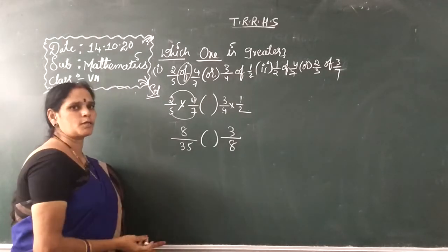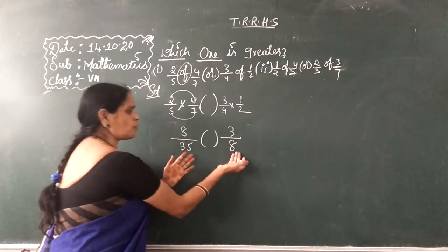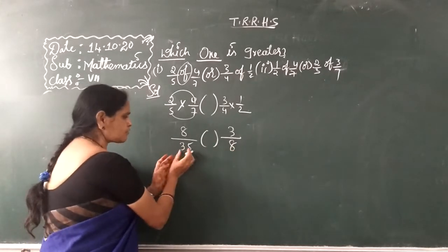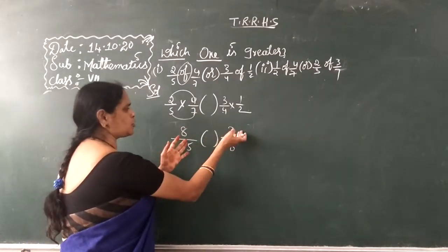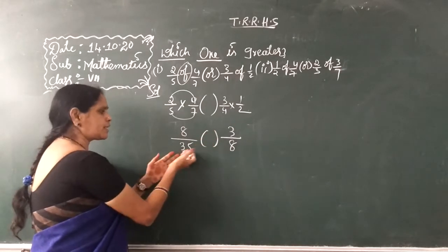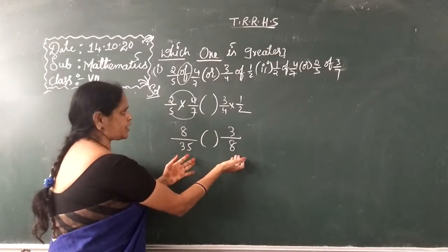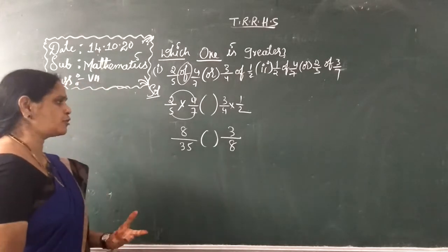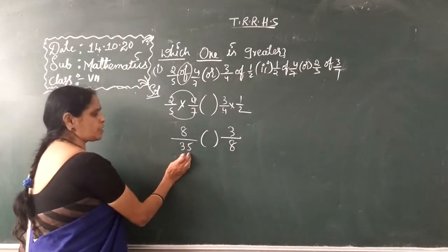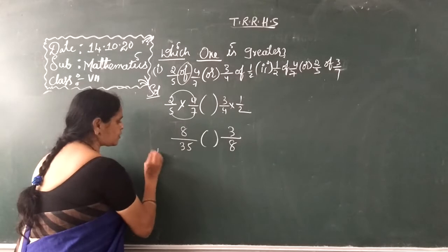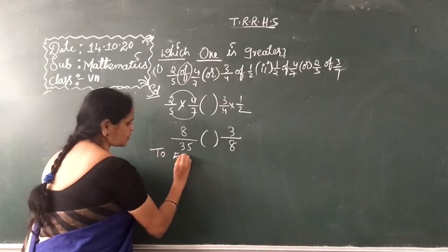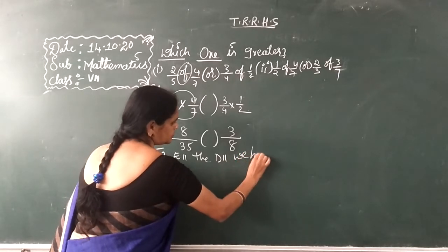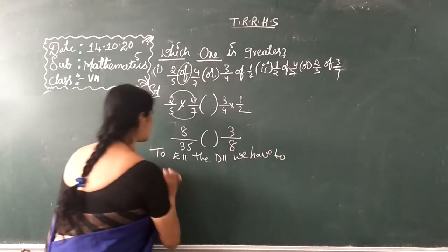Now which is greater? We cannot compare directly because your denominators are different. Your point should be the denominator — so if the denominators are the same, by comparing the numerator you can place the symbol. But your denominators are different, so you cannot do it directly. What you should do is equalize the denominator — we should do LCM to equalize the denominator.